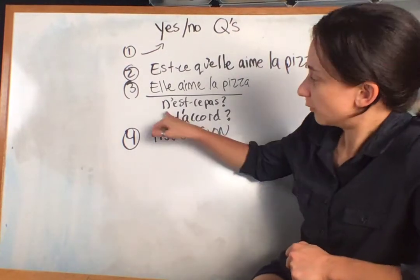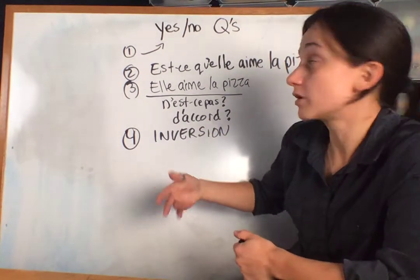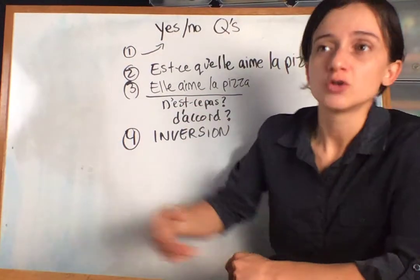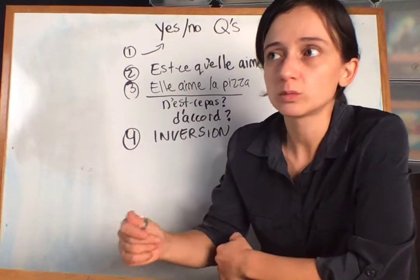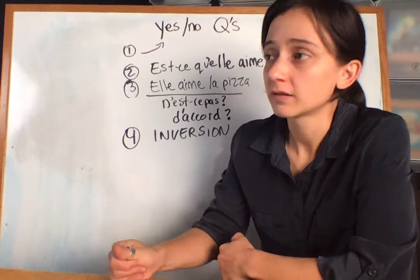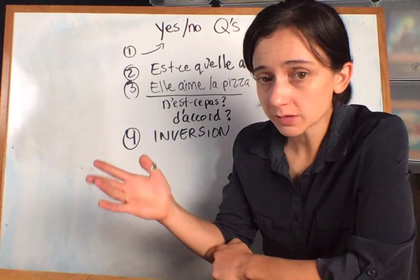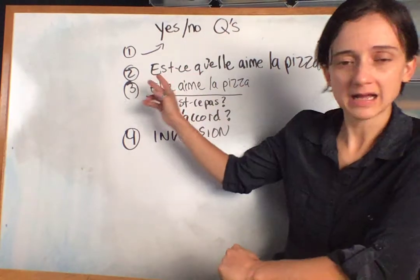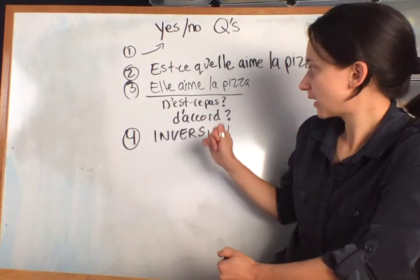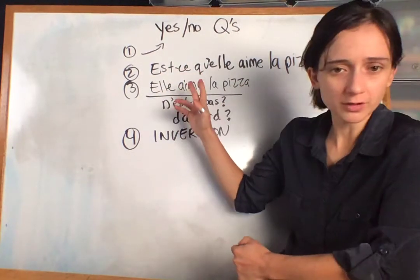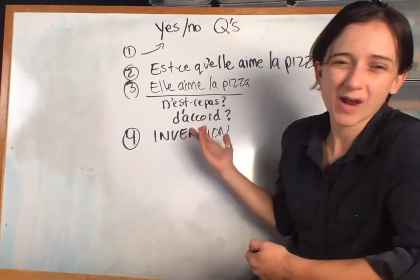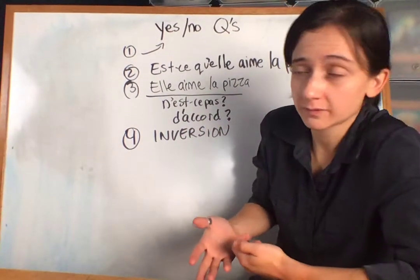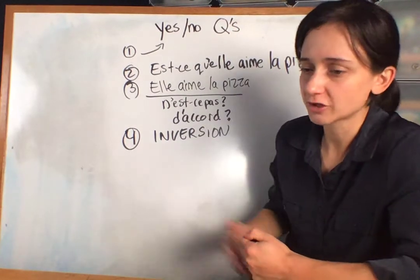'N'est-ce pas' you can use a whole lot more often — like 'she likes pizza, n'est-ce pas?' or 'you like hamburgers, n'est-ce pas?' Use d'accord when 'okay' would work in English; it would also work in French.